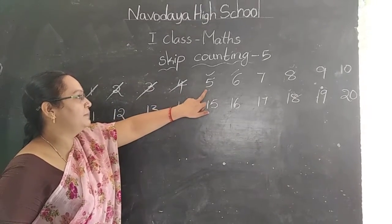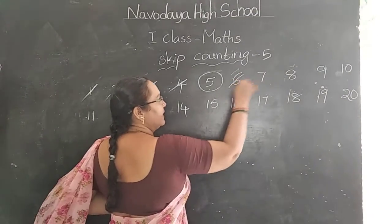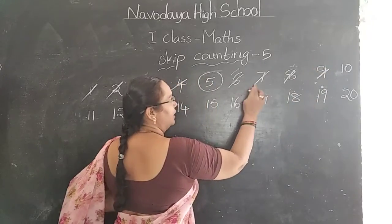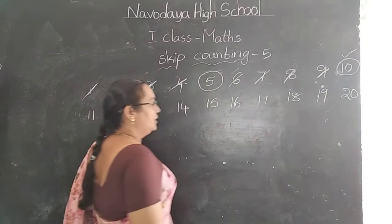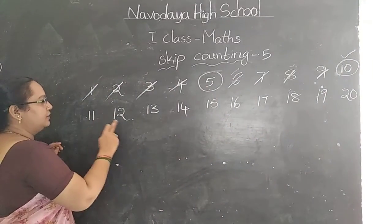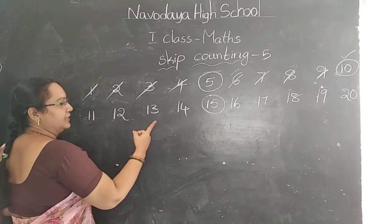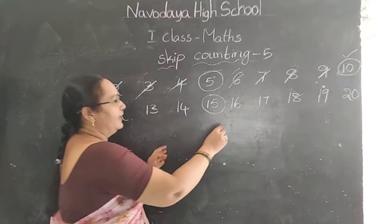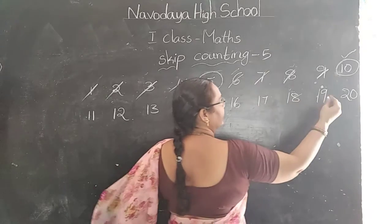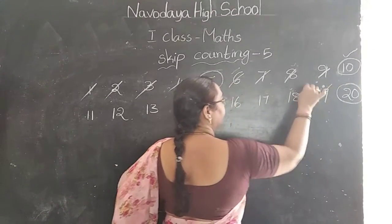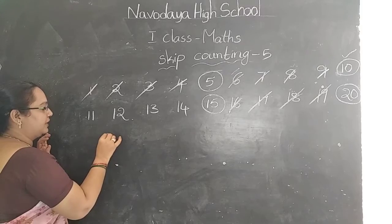5, 6, 7, 8, 9 — then 1, 2, 3, 4, 5 — the 5th number is 10. Next: 1, 2, 3, 4, 5 — the 5th number is 15. Next: 1, 2, 3, 4, 5, 6, 7, 8, 9, 10, 11, 12, 13, 14, 15. We have to count only skip counting of 5.